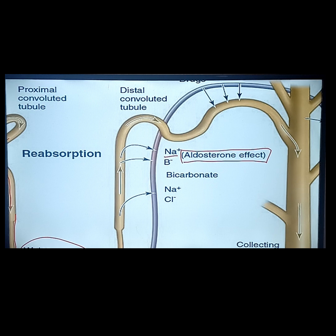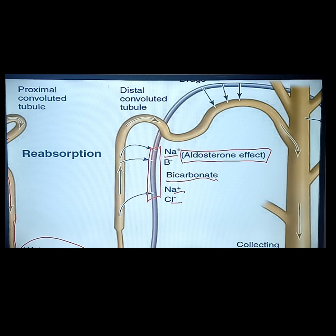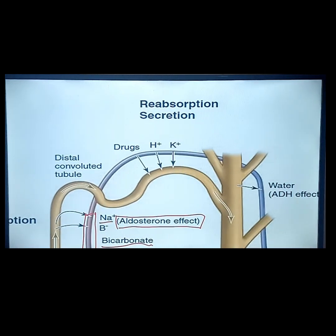Aldosterone is primarily a mineralocorticoid — a salt hormone — produced by your adrenal glands. Bicarbonate is also reabsorbed through the help of carbonic anhydrase. Sodium plus chloride makes up the salt. In the arterioles, osmolarity rises again, and because of that increased osmolarity, more water is reabsorbed.